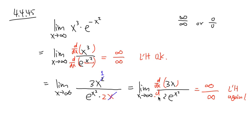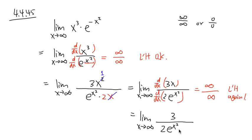Alright, I think you'll enjoy doing L'Hôpital's rule because it's actually pretty fun. Take the derivative on top and the derivative on the bottom. This is the same as the limit when x goes to infinity. The derivative of 3x is just 3. On the bottom, the derivative of 2e to the x squared — copy down 2e to the x squared, then multiply by the derivative of the inner function, which is 2x, just like before.